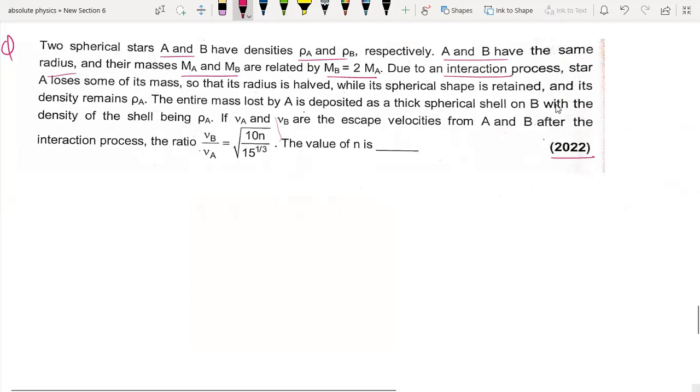Due to interaction process, star A loses some of its mass so that its radius is halved while its spherical shape is retained. The entire mass lost by A is deposited as a thick spherical shell on B.